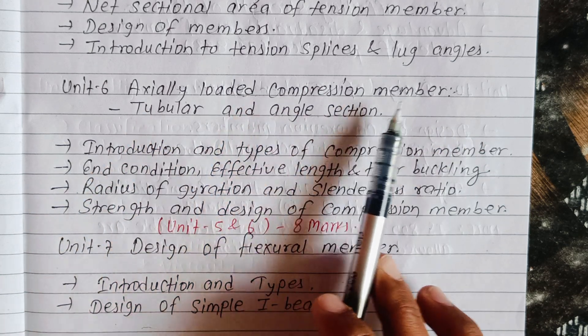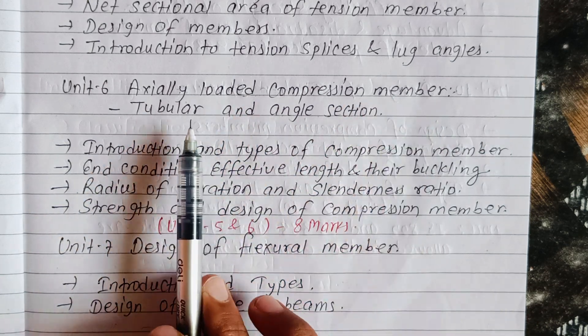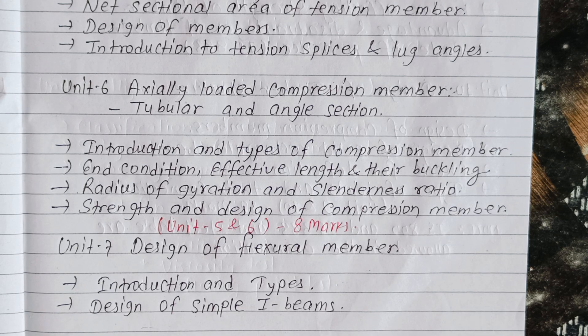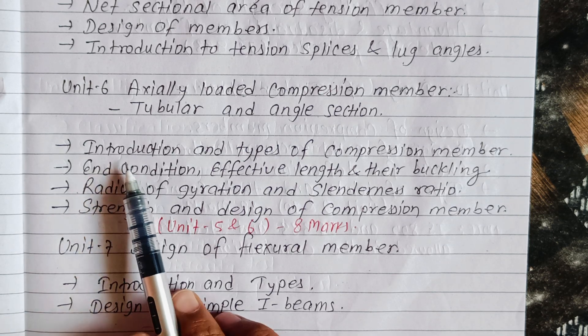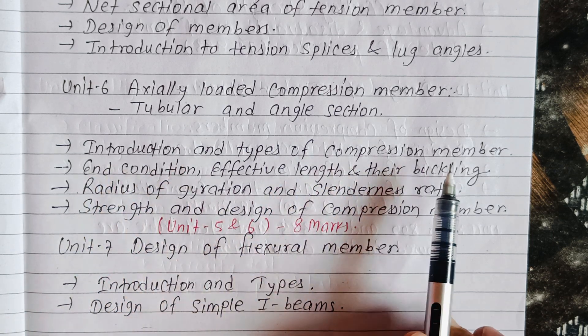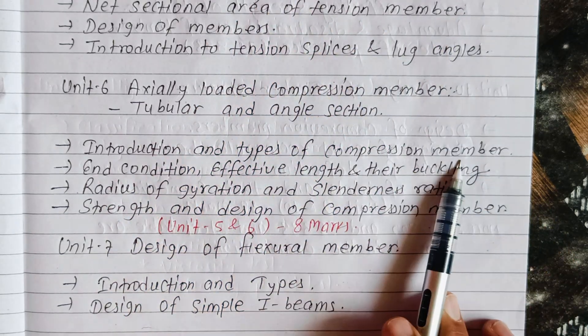Unit 6 covers axially loaded compression members — such as table or angle sections. Topics include introduction and types of compression members, similar to tension members, and net sectional area calculations for compression members.